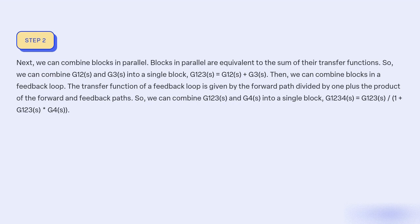Next, we can combine blocks in parallel. Blocks in parallel are equivalent to the sum of their transfer functions. So we can combine G12(s) and G3(s) into a single block, G123(s) equal to G12(s) plus G3(s).